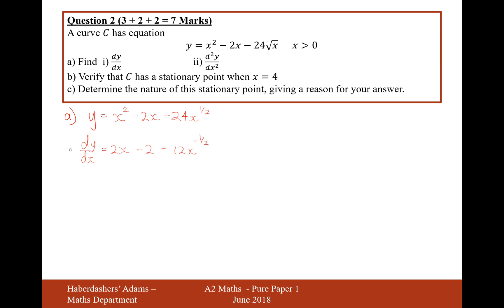For part 2, I need to differentiate again. d²y/dx²: 2x differentiated gives me 2, the constant 2 differentiates to nothing, and then for the last term it's going to be plus 12x to the minus 3 over 2. So there we are — that's the answer to part 2.